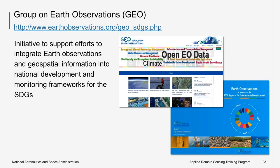GEO is a partnership of government institutions, academic and research institutions, data providers, businesses, engineers, scientists, and experts that aim to integrate Earth observations into decision-making. The GEO community has created the Global Earth Observation System of Systems to better understand observing systems and share data through existing infrastructure. There are more than 200 million open data resources from more than 150 national and regional providers such as NASA and ESA, including international organizations such as the World Meteorological Organization and commercial sectors such as DigitalGlobe. Earth Observations in Service for the 2030 SDG Agenda enables contributions from the Earth observing community.